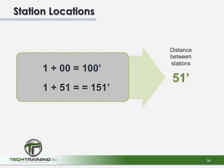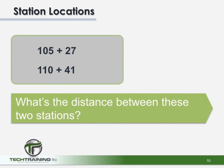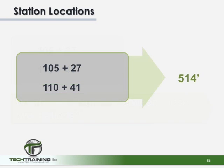However, what about the distances between these two stations: 105+27 and 110+41? The distance between station 105 and 110 is 500 feet, plus the 27 on the 105 and the 41 on the 110 equals 514 feet — being the distance between these two stations.